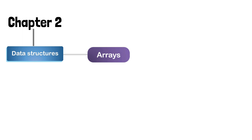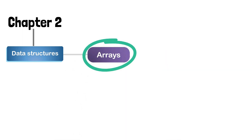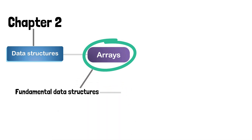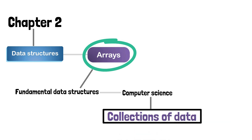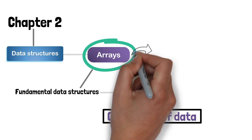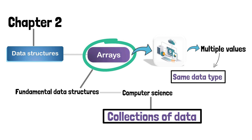Before we begin, I would like to make sure everyone is on the same page. Arrays are one of the most fundamental data structures in computer science, and they are used to store collections of data. An array is a contiguous block of memory that can store multiple values of the same data type.